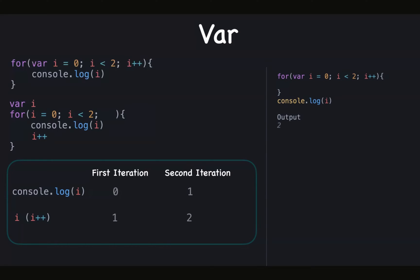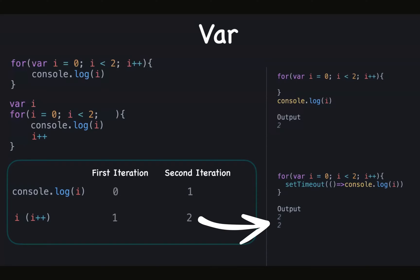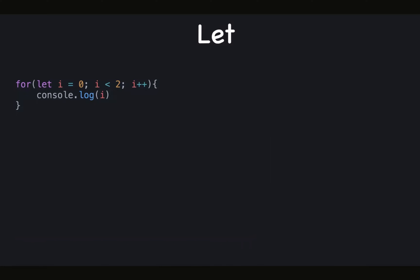Here's another example — this is one of the famous interview questions. It gives two, two times, because setTimeout is asynchronous and executes after the loop finishes. By that time, the value of i has already been changed to two.